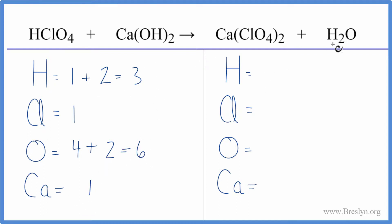On the product side, we have the two hydrogens in the H2O. Chlorines, we have two times the one, so two of those. Oxygens, two times four, that's eight. Plus, we have one oxygen here, so we have a total of nine oxygens, and then the one calcium.